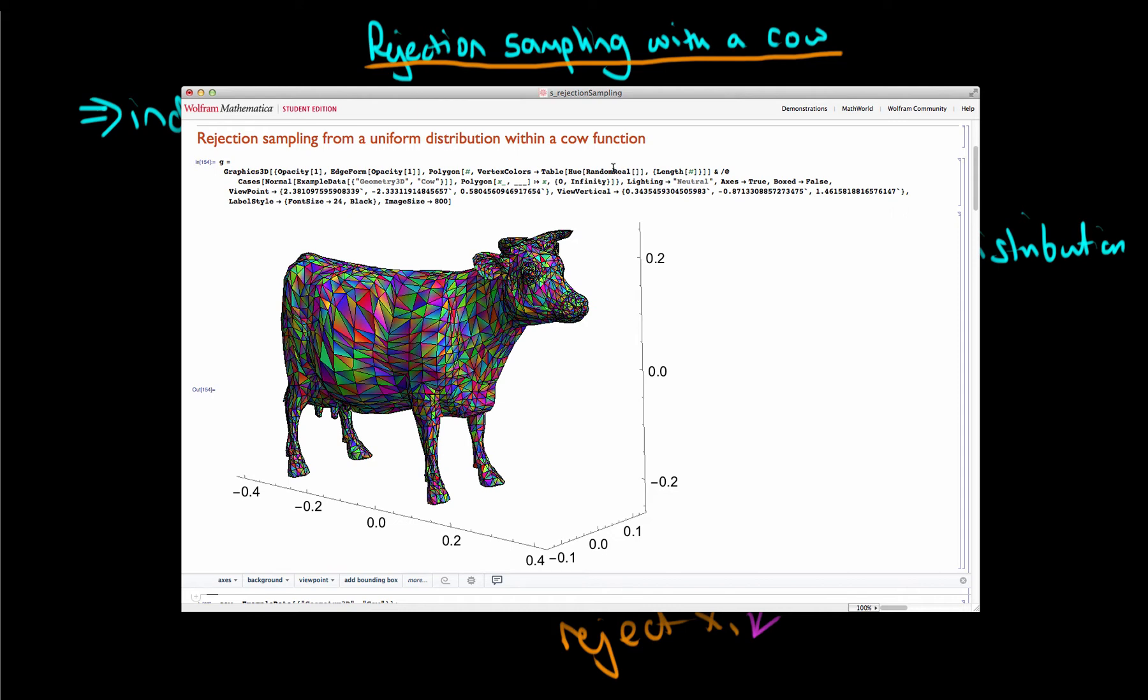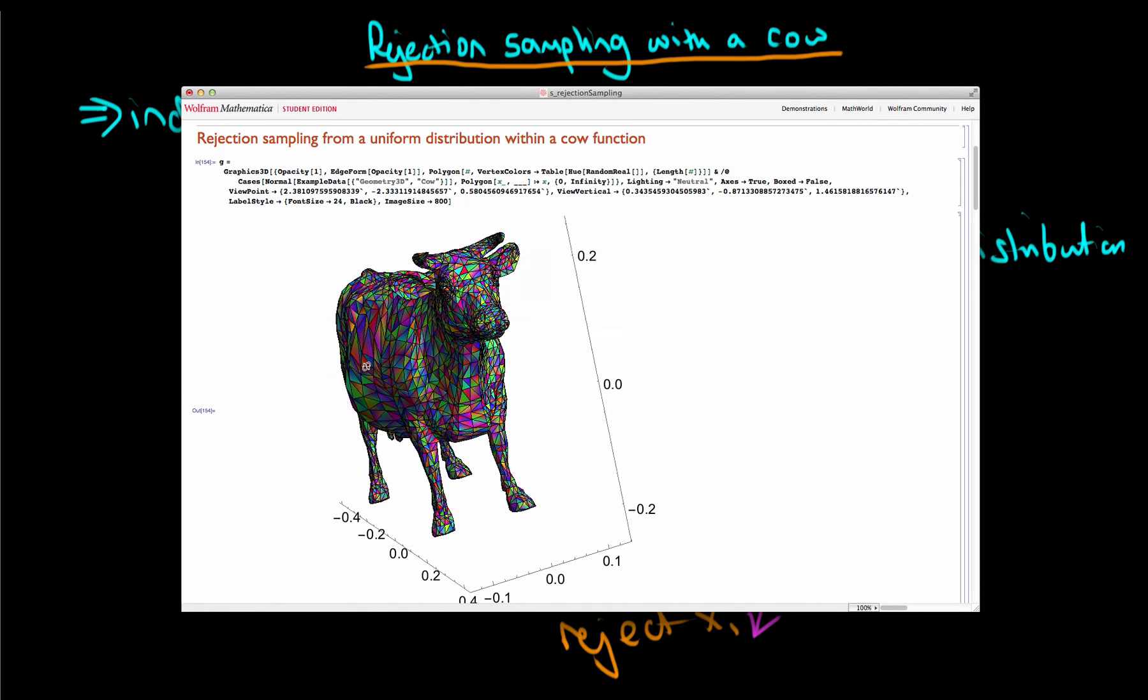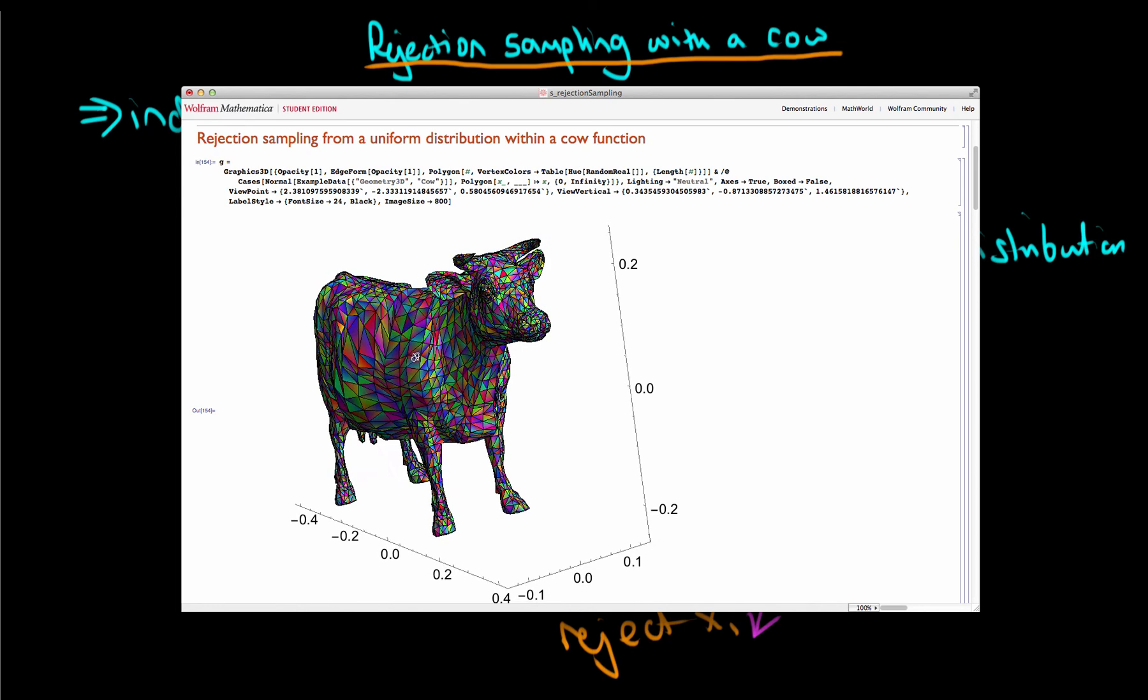So how are we going to use rejection sampling to generate independent samples from within the cow's boundary? Well the idea is that we can generate x, y and z coordinates uniformly between the bounds which I've shown here.